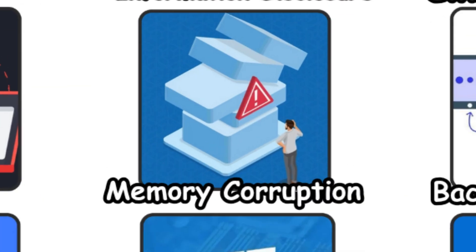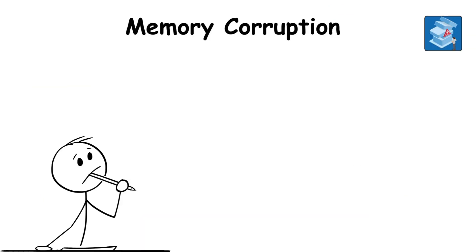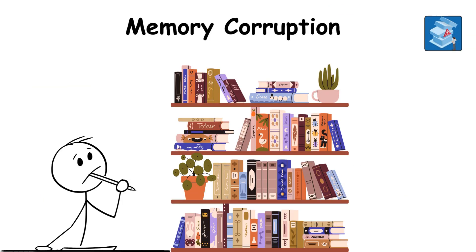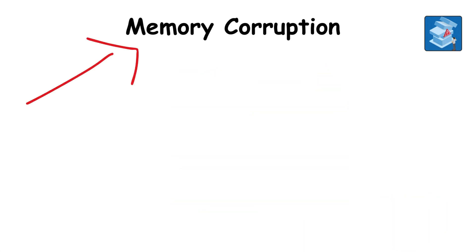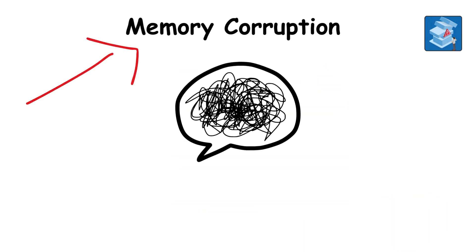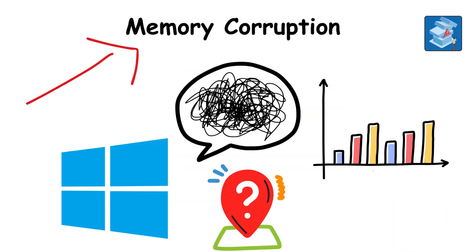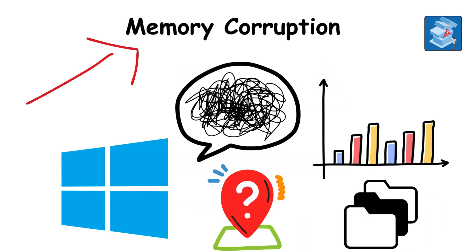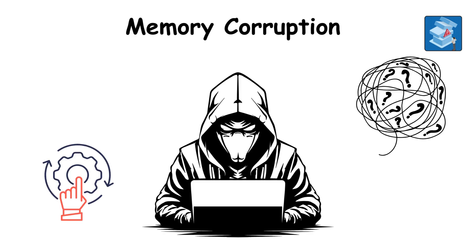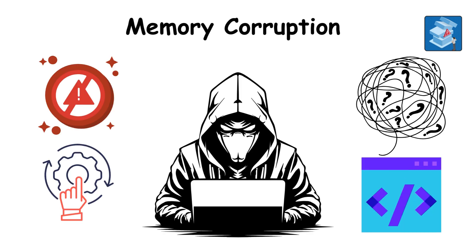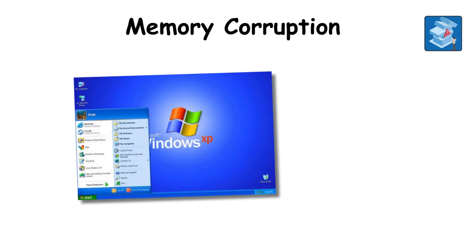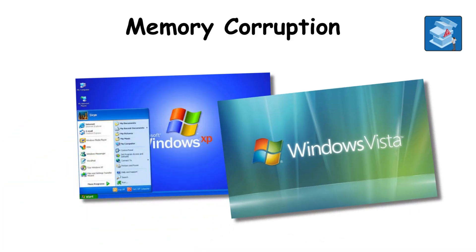Memory corruption. Imagine a bookshelf where books fall into the wrong sections. Memory corruption flaws confuse Windows about where data should be stored. Attackers use that confusion to execute harmful code. XP and Vista were especially affected. It is disorganization that attackers turn into opportunity.